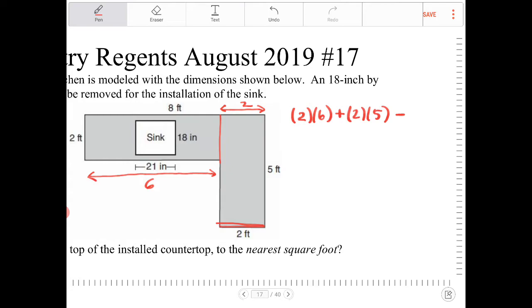And notice right now the area of the sink is in units of inches. We're going to convert that into units of feet. So 18 inches, we're going to convert that into feet. So should we be multiplying by 12 or dividing by 12?